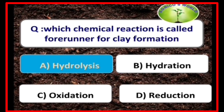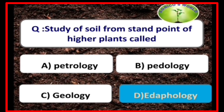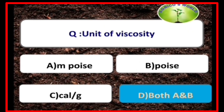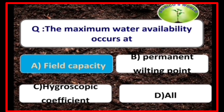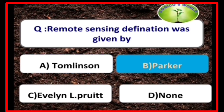Hydrolysis is the chemical reaction that is the forerunner for clay formation. Study of soil from the standpoint of higher plants is called edaphology. Poise is the unit of viscosity. The maximum water availability occurs at field capacity. The definition of remote sensing was given by Evelyn Pruitt.